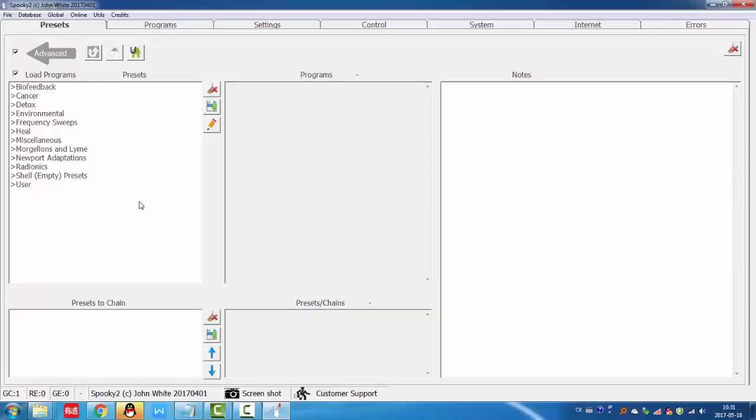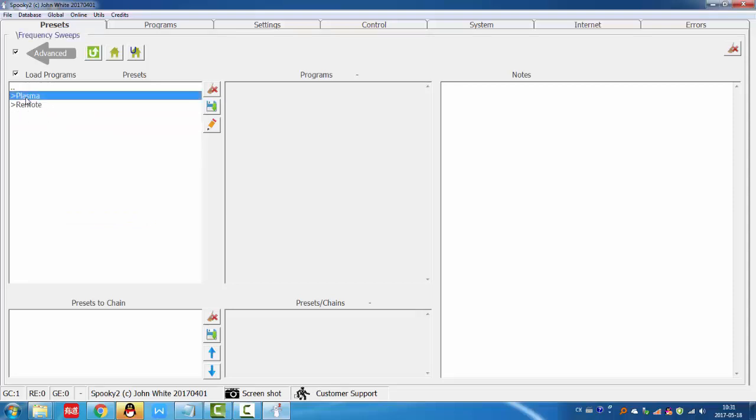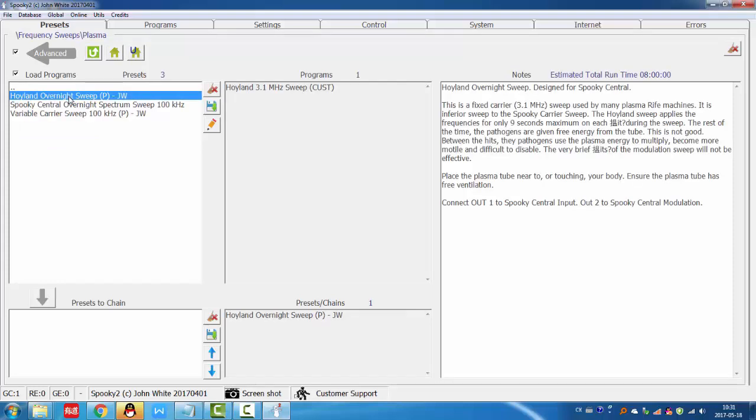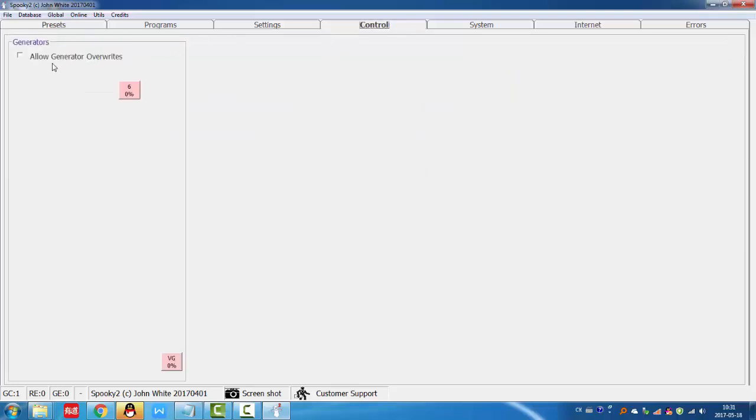There are two kinds of presets for plasma: the factory presets and shell presets. You can choose presets under plasma directory. For example, I choose this one. Then go to control tab, tick the generator overrides, open the generator and click start.